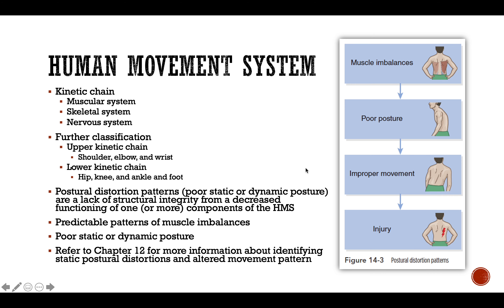The kinetic chain — muscular system, skeletal system, and nervous system — is interconnected through flexibility. If any one is disrupted, it affects the others. If the muscular system is overactive or tight, the nervous system won't allow those muscles to fire correctly, and then the skeletal system — those joints — won't move correctly. This can become very challenging very quickly.